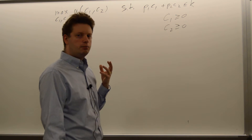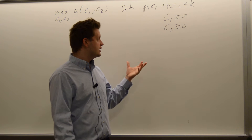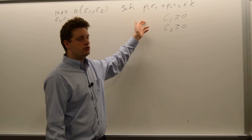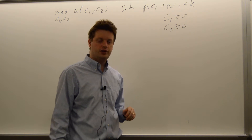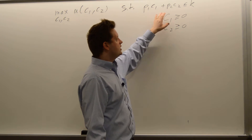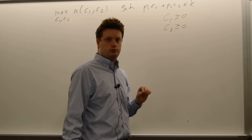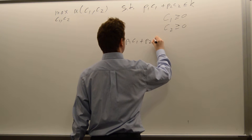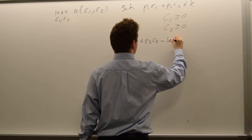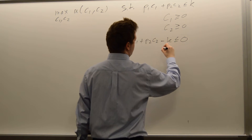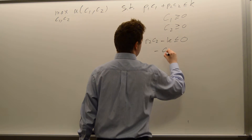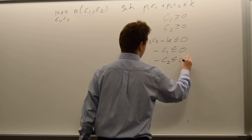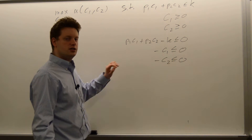Before we can apply and test this constraint qualification, we need to bring these constraints into the right format, which is something less than or equal to 0. So the first one becomes p1·c1 plus p2·c2 minus k ≤ 0, the second one is −c1 ≤ 0, and the third one is −c2 ≤ 0. We now have all three constraints in the correct format.